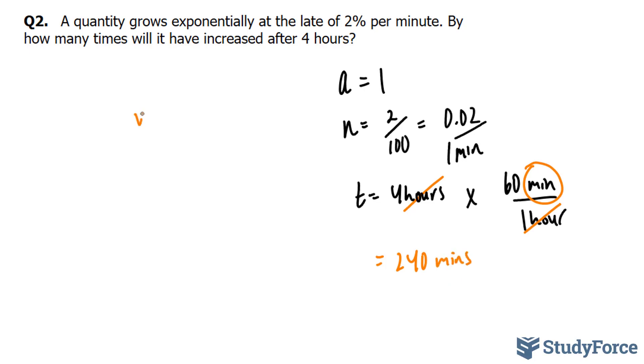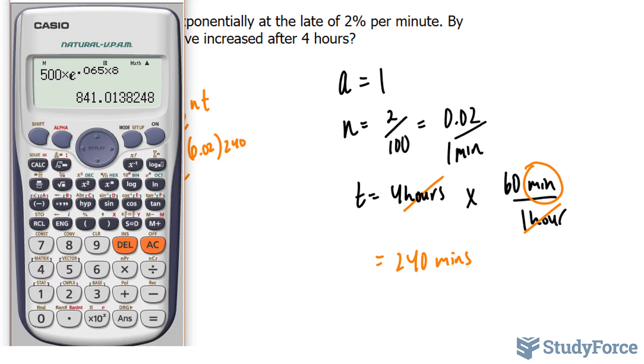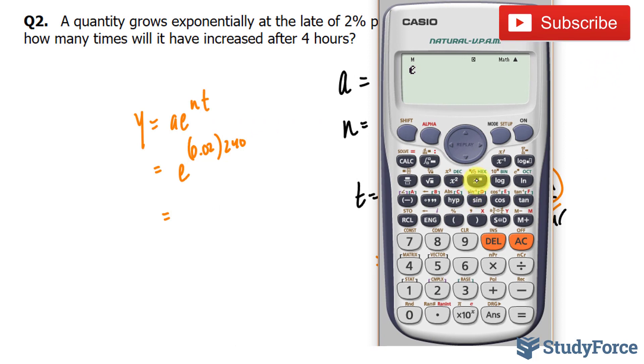All we have to do now is substitute these values into the formula, where we have our initial amount of 1 times e to the power of 0.02 times 240. Using our calculator, alpha this button to the power of 0.02 times 240 gives us 121.5.